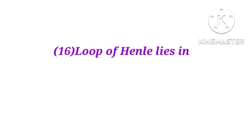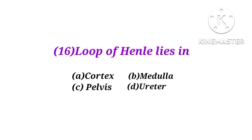Number 16. The loop of Henle lies in the cortex, medulla, pelvis, or ureter? The answer is B. The loop of Henle lies in the medulla of the kidney.